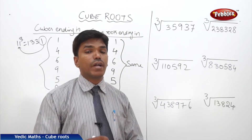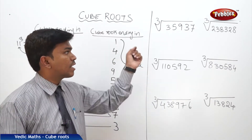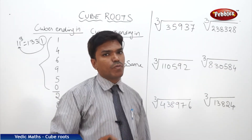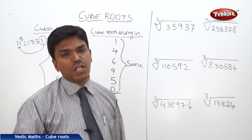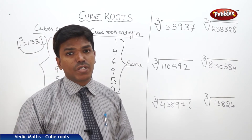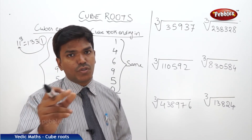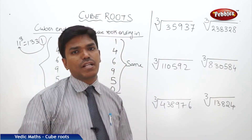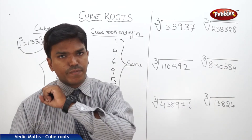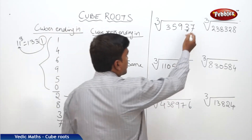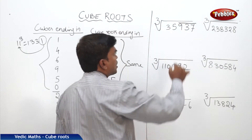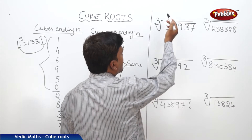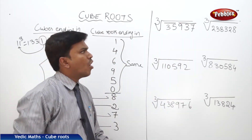Now let us discuss how to find the cube root of a number with an example. The first and foremost step — just like in square roots where we did partitions of 2 digits from the right — here we are going to partition the number into groups of 3 digits from the right side, since the cube is to the power of 3. First take 3 digits, then again 3 digits; if there aren't 3 remaining, take the remaining digits as they are.